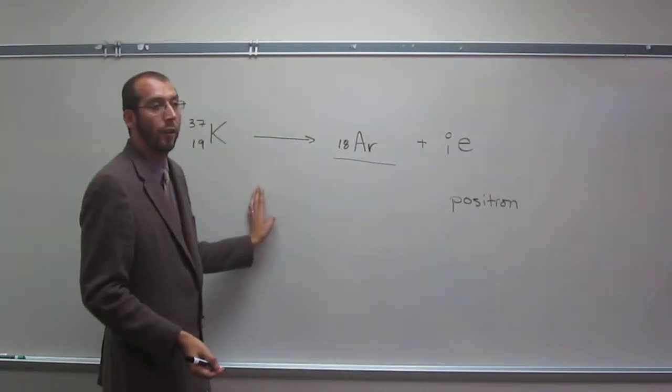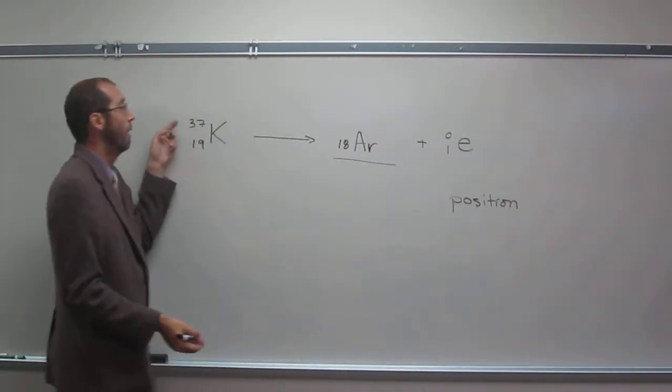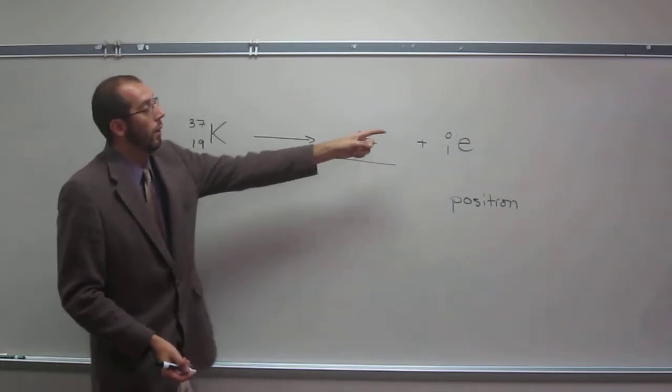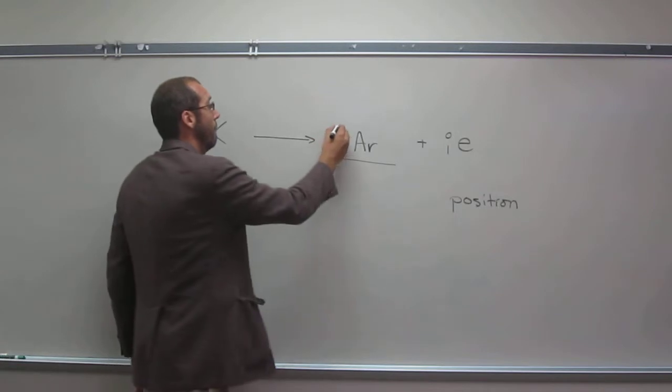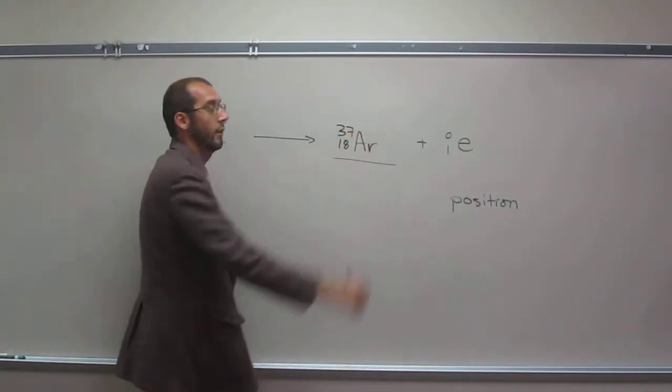And what's the mass of argon going to be? Well, over here it's 37. Over here it's 0 plus something equals 37, so it must be 37.